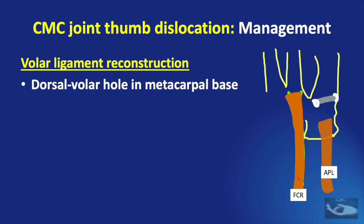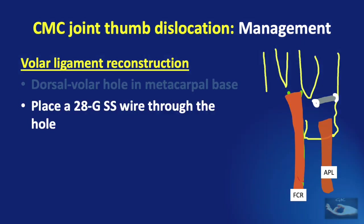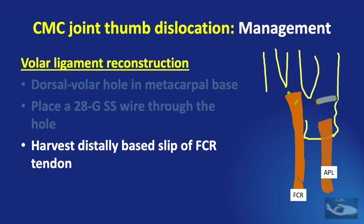The hole should exit just distal to the volar beak at the insertion point of the volar oblique ligament. A 28-gauge stainless steel wire is placed through the hole for later passage of the tendon graft.